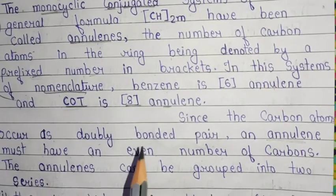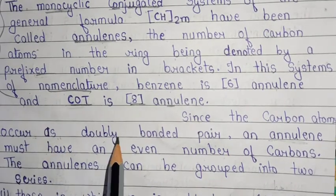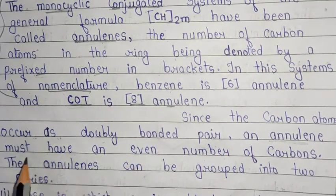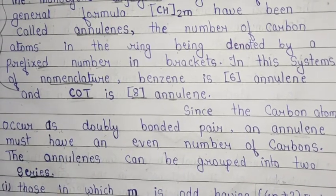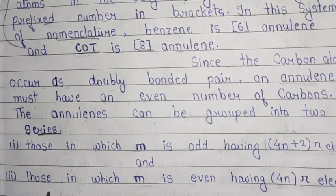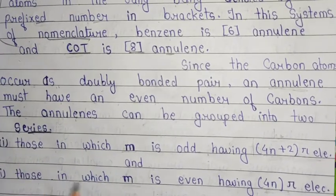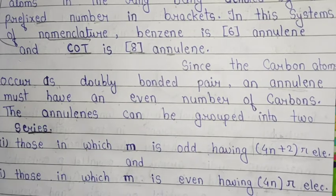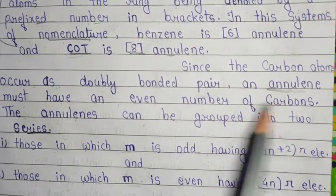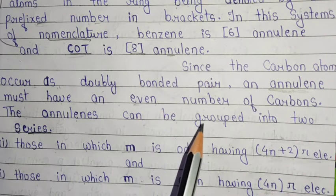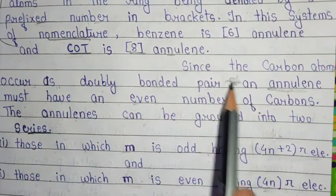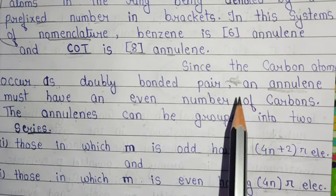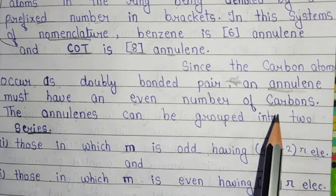Some important points related to annulins: since the carbon atoms occur as doubly bonded pairs, an annulin must have an even number of carbons, and annulins can be grouped into two series. That is a very important criteria for annulin — it must have an even number of carbons in the compound, like [4]annulin, [6]annulin, and [8]annulin.